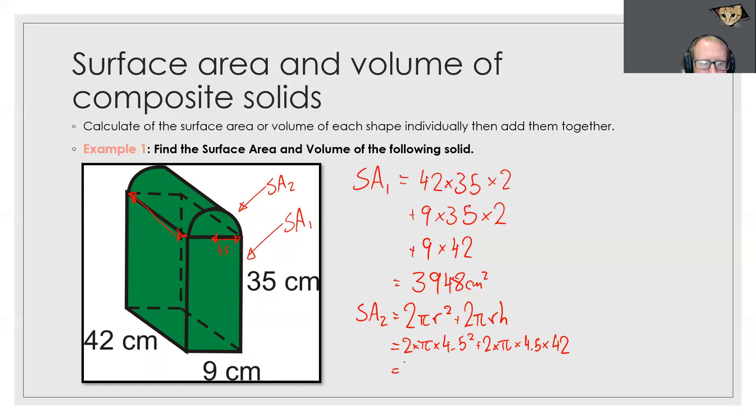Now we quickly put that all in our calculator and I get 1314.7, so we'll round that up to 1315. Our total surface area is SA1 plus SA2 which we can quickly add together to get our final answer of 5263 centimeters squared.